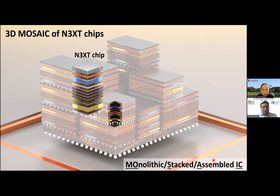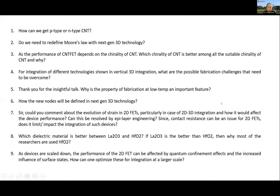Thank you very much, Professor Wong, for taking us through this journey of the last 75 years and the importance of the transistor invention, especially the move from 2D to 3D architectures opening new avenues for researchers. We now have questions from attendees. The first question: how can we get p-type and/or n-type CNT transistors? Similar to conventional silicon transistors, you can dope the source and drain extension regions either p-type or n-type to get the corresponding CNT transistors.